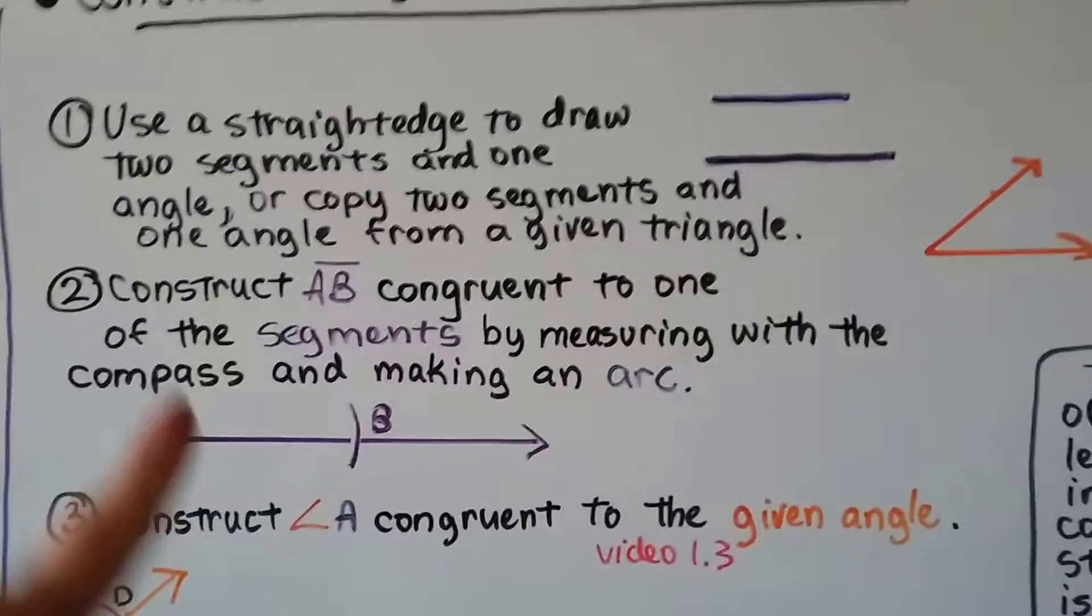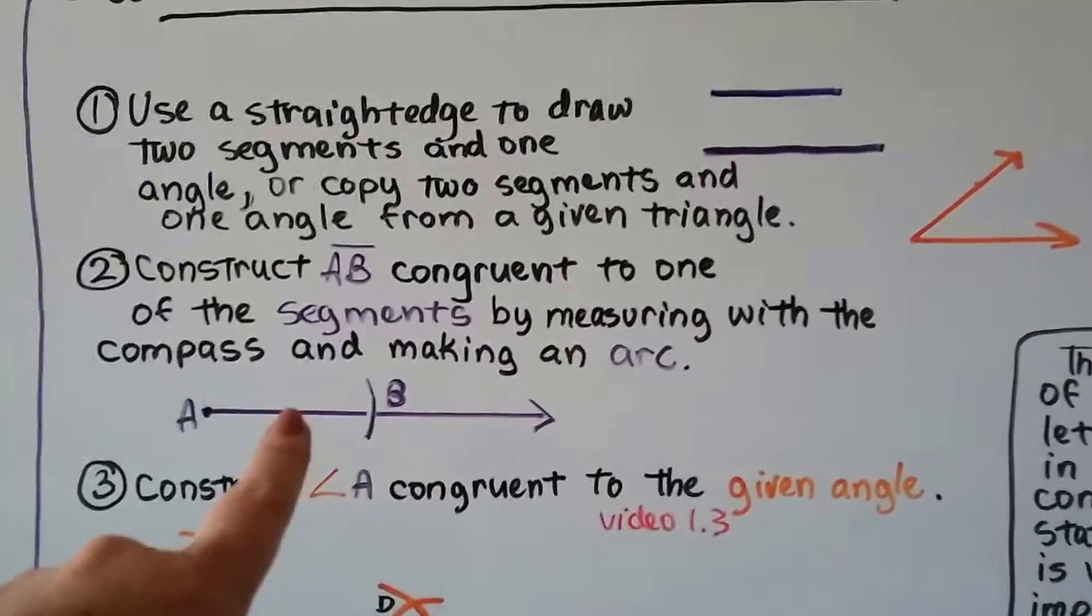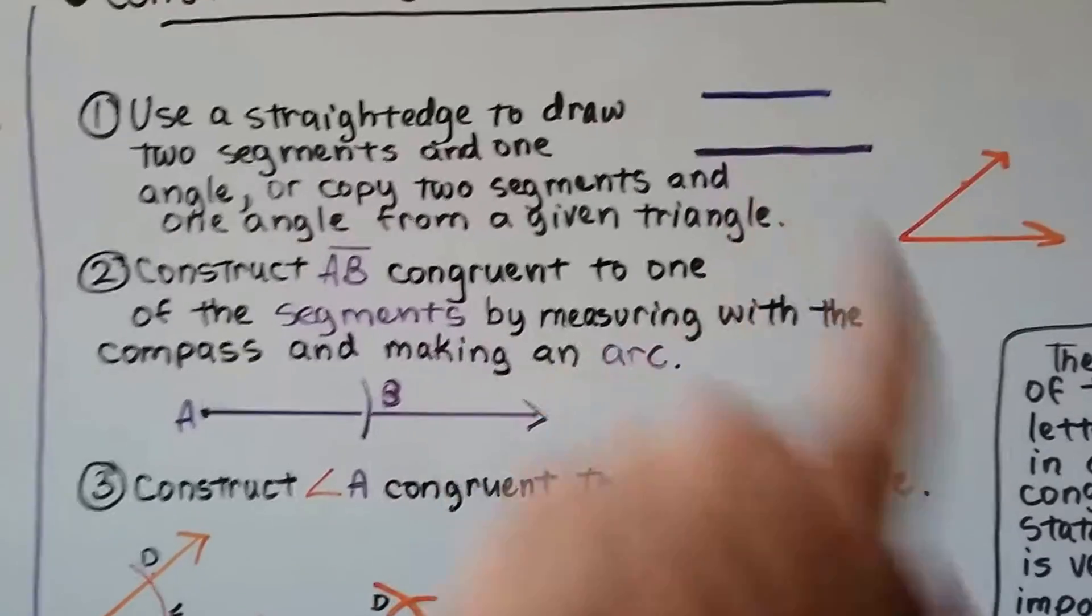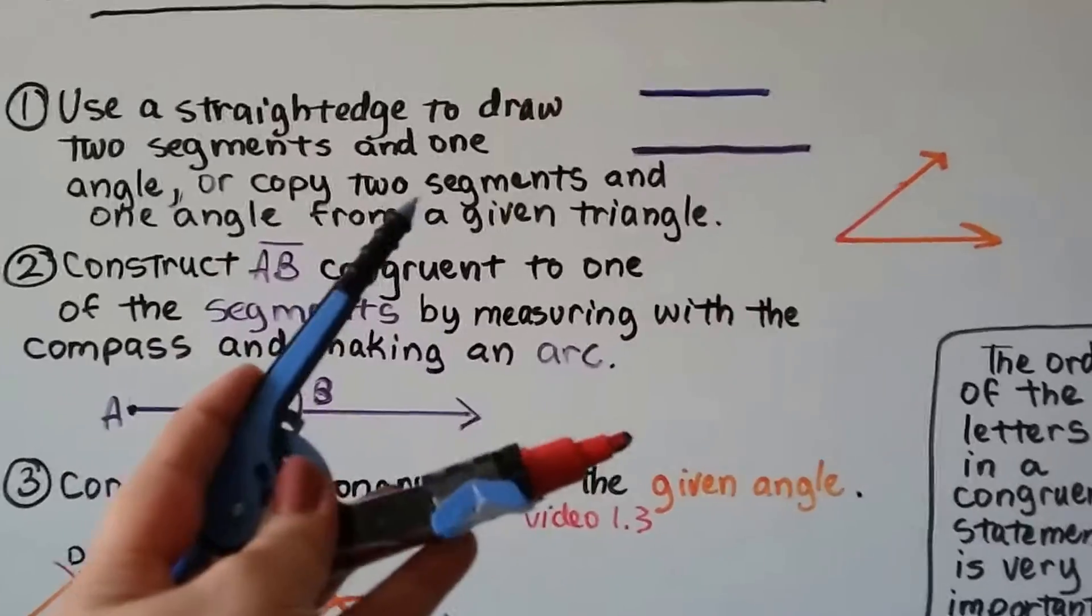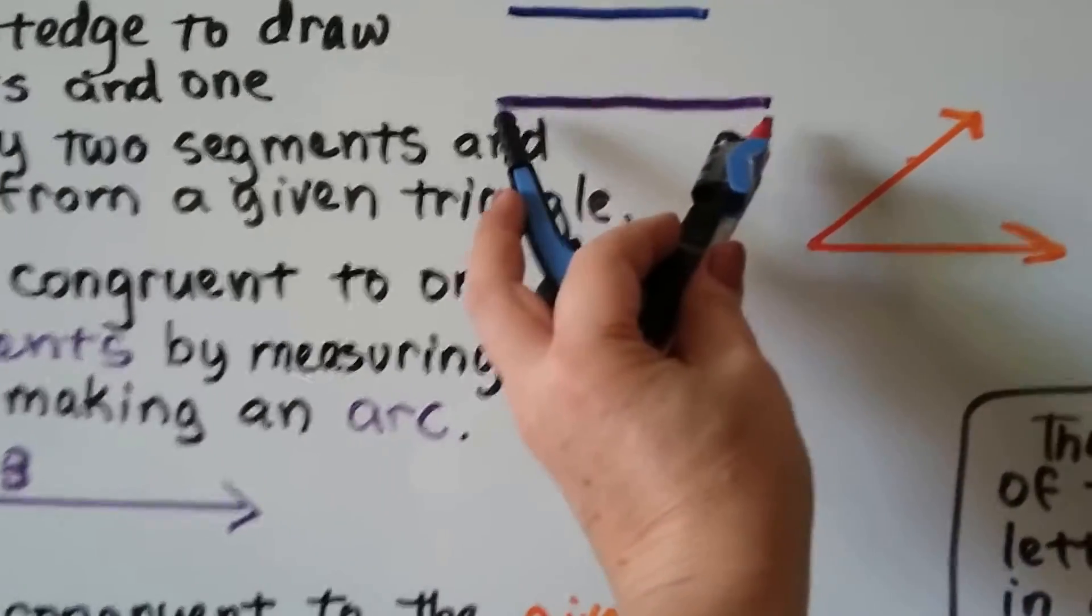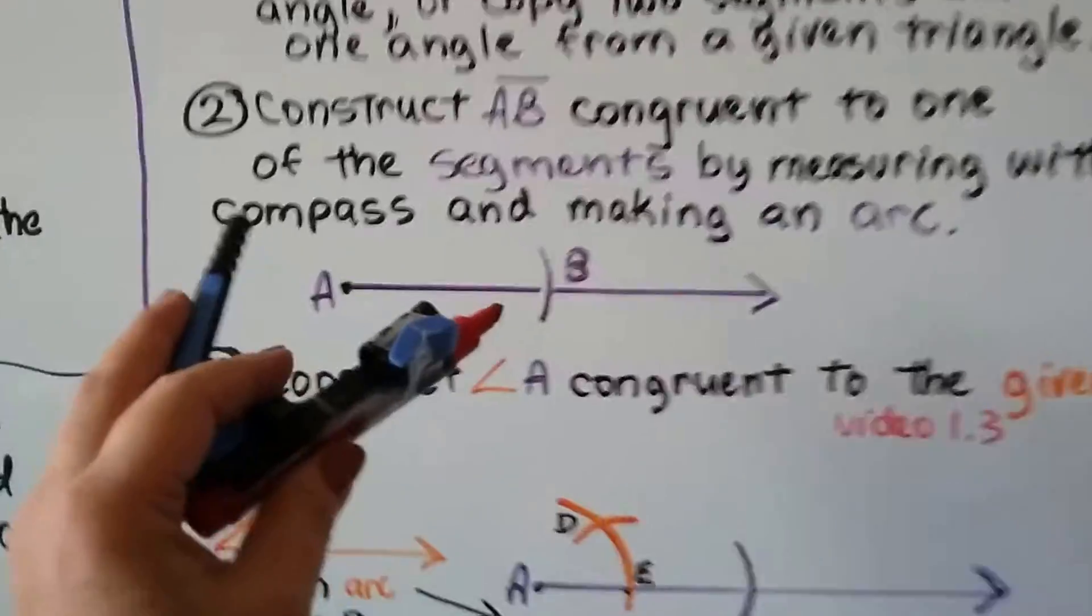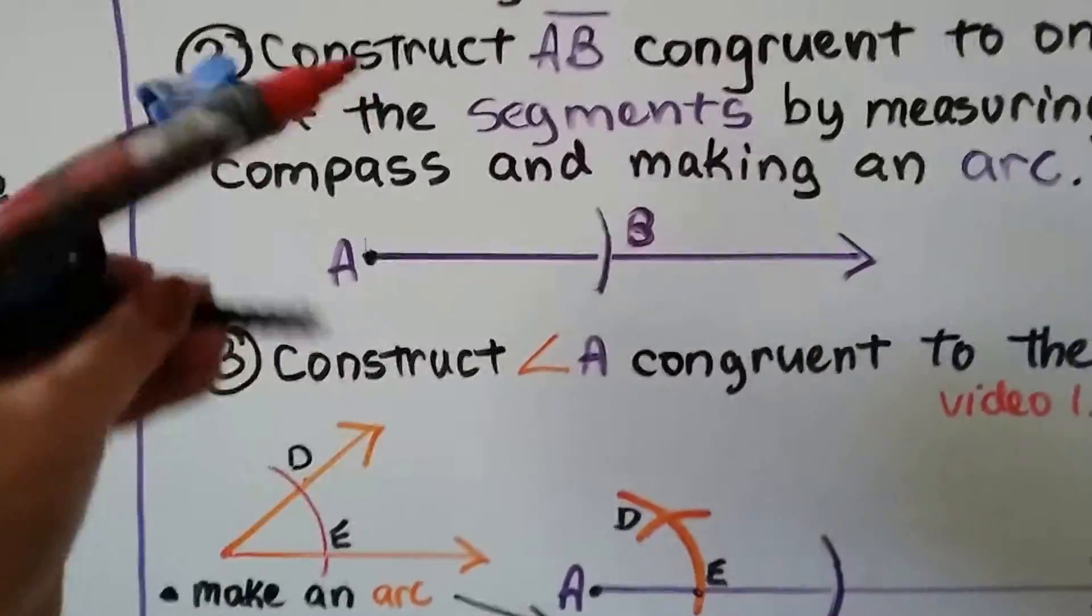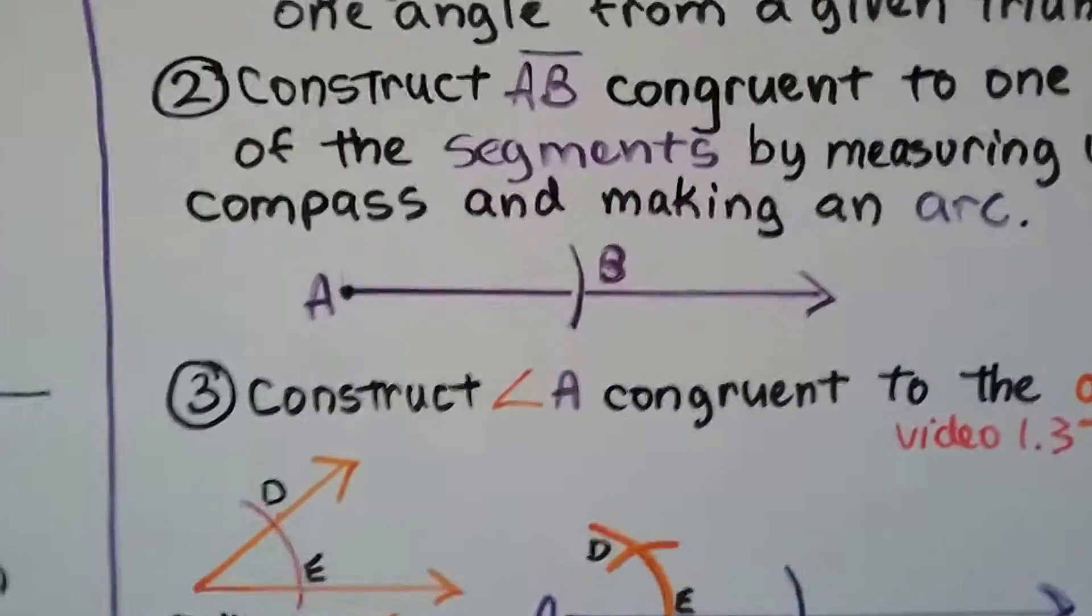Now we're going to construct segment AB, this purple one, congruent to one of the segments by measuring the compass and making an arc. I'm going to take my compass and measure that segment. Then I'm going to draw a line, put point A here and put an arc and mark that as point B.